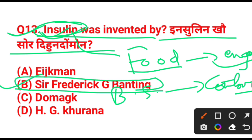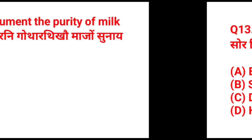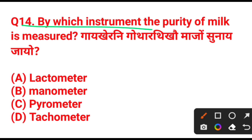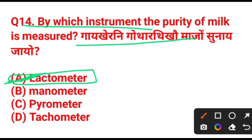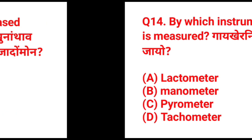Next question: by which instrument is the purity of milk measured? The answer is option A — lactometer. A lactometer is the instrument used to measure the purity of milk. This is a very important question.